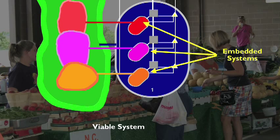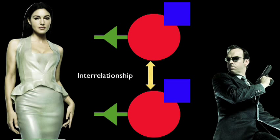Some people consider a free market economy as a complex adaptive system. Others say it is part of a viable system. Here we see three systems embedded in a larger viable system.